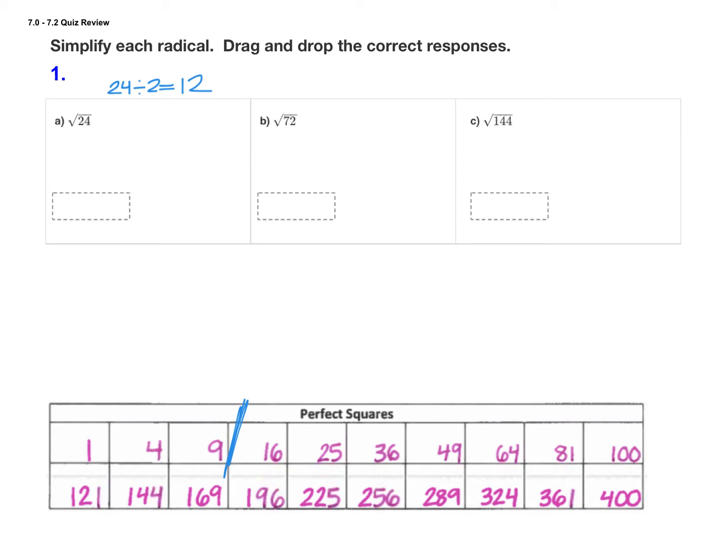Now if you take 24 and you divide it by 9, that does not work. 24 divided by 9 is a decimal, but 24 divided by 4 is 6.